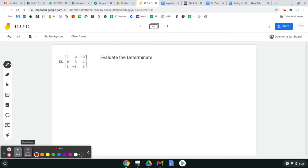here's how you do this. You got one times, and then you cross out the ones that are in that row. So then the determinant of three, two, negative one, three plus,